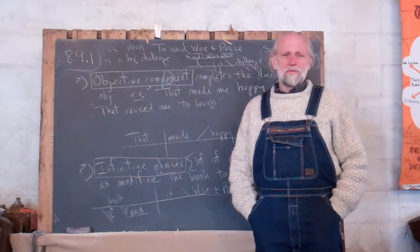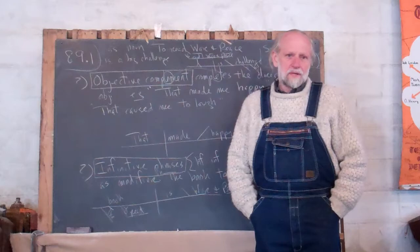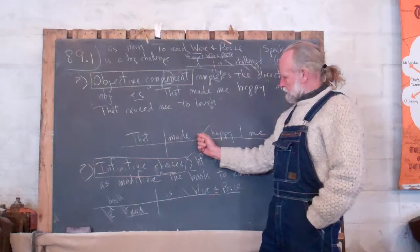The sun caused the tomatoes to be red. That would be one. Anyway, here's the way you diagram them. That made me happy. This line slopes toward the direct object, and it completes it.